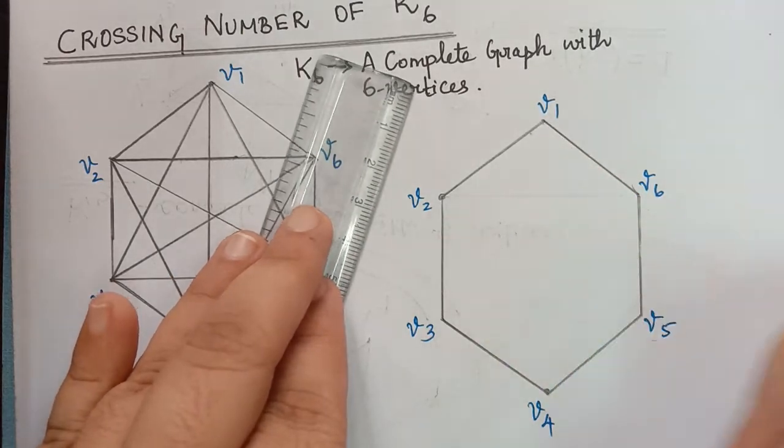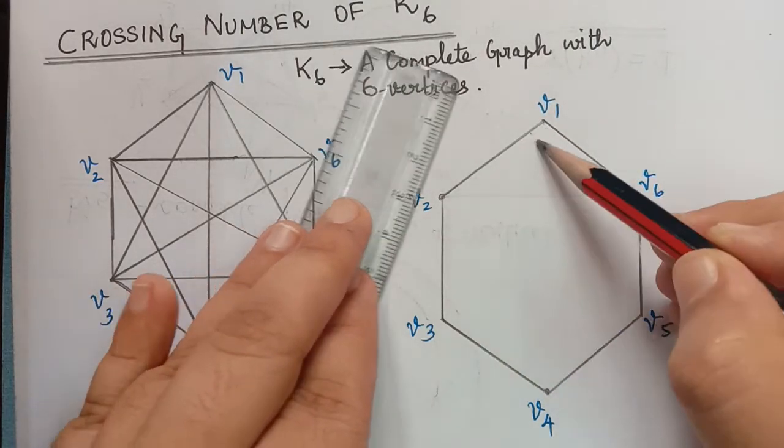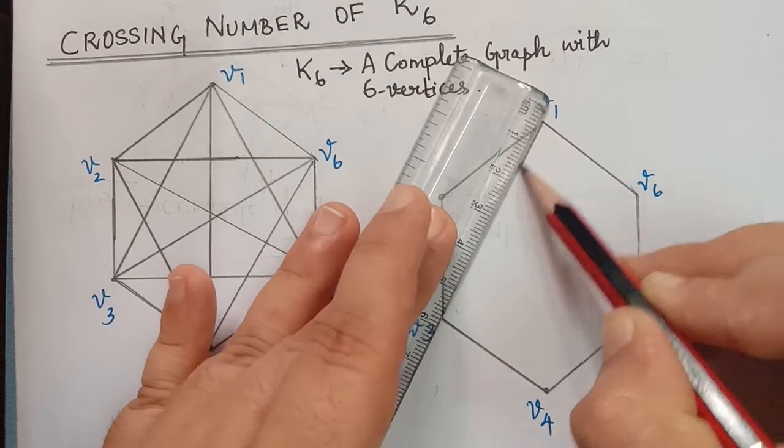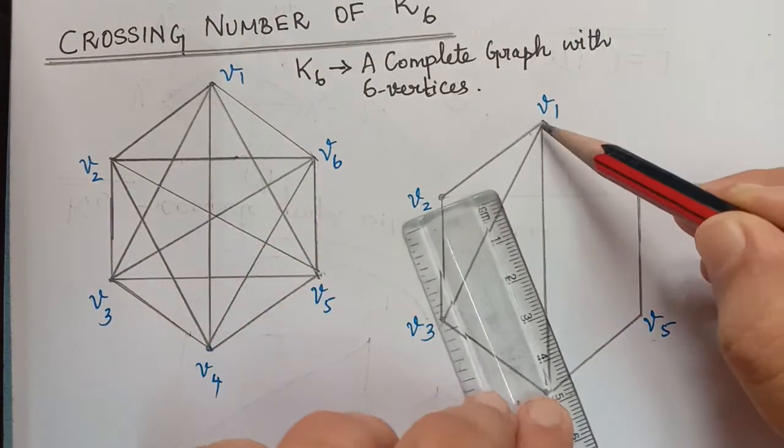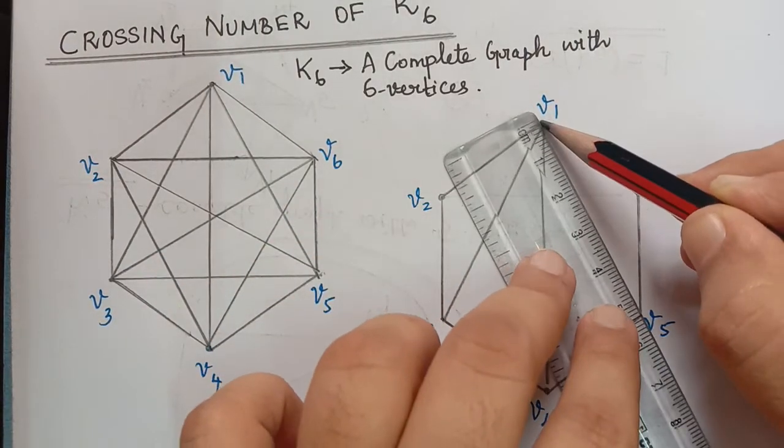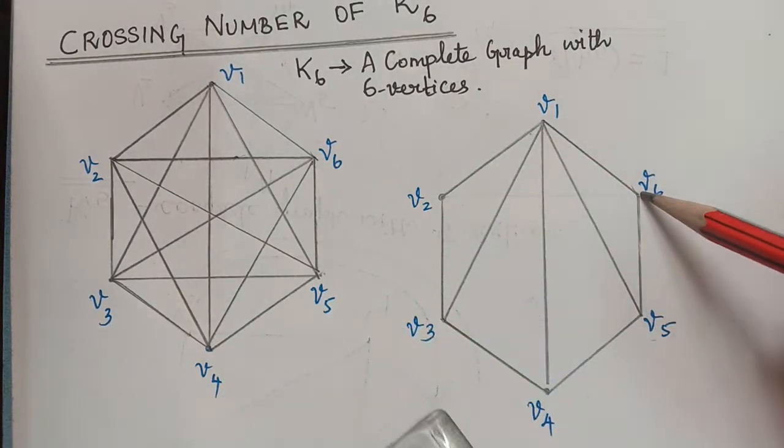V1 will have edges with all the vertices. Already it has with V2. This is with V3, V4, V5, and with V6 it already has.